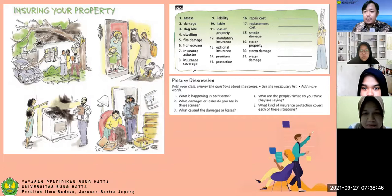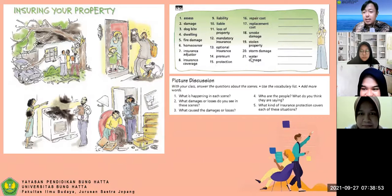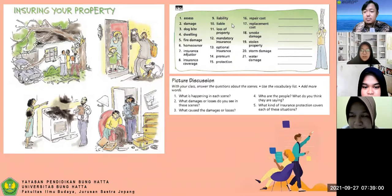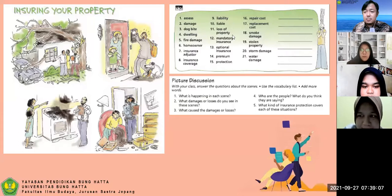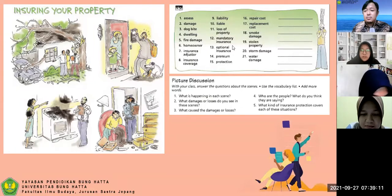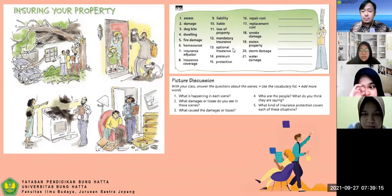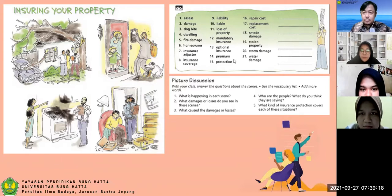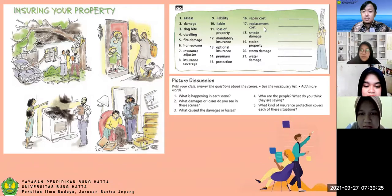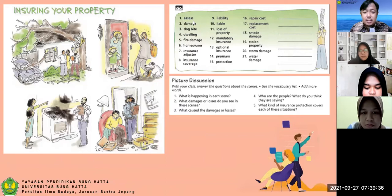We continue from number nine to twenty-one. Please read, Zakia. Number nine: liability. Number ten: liable. Eleven: loss of property. Twelve: mandatory insurance. Thirteen: optional insurance. Fourteen: premium. Fifteen: protection. Seventeen: repair costs. Then: replacement cost, smoke damage, stolen property, storm damage, water damage. Thank you Zakia. This list relates to insuring your property.